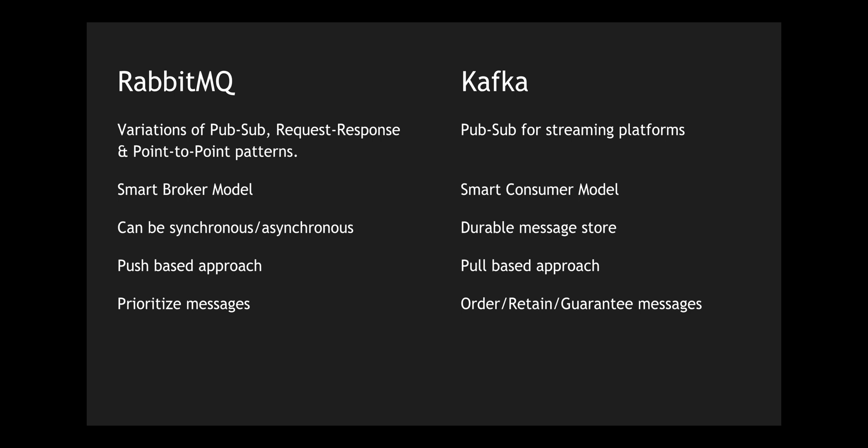RabbitMQ helps us in prioritizing messages if there is a use case where you want to prioritize events one above the other. In Kafka you can order messages, retain messages, and get guarantees compared to what RabbitMQ provides. The major reason why people go for Kafka is for retention of messages. RabbitMQ is a plain point-to-point queue — once the consumer consumes the message it gets deleted. With Kafka you can keep a retention period and replay or re-consume the message from the broker.